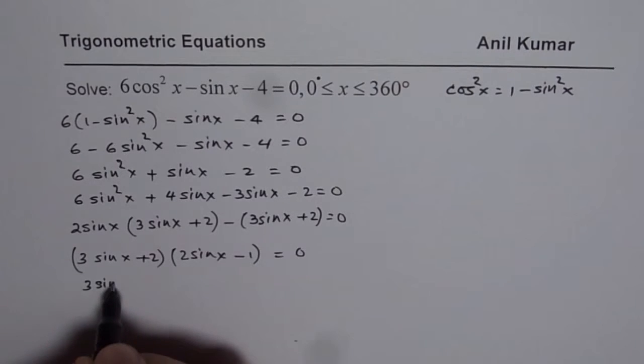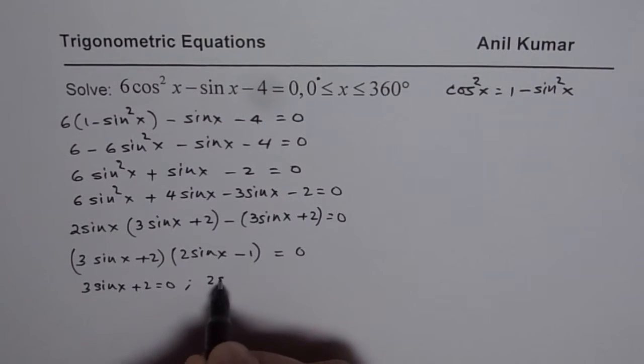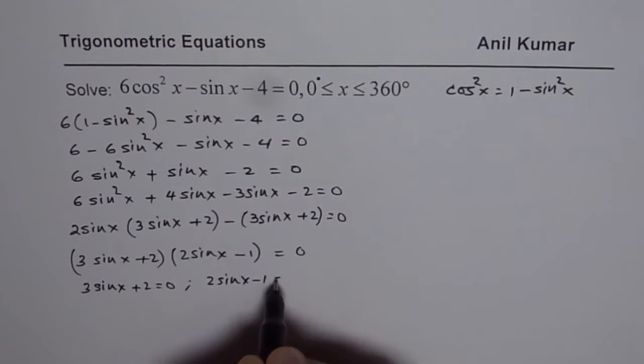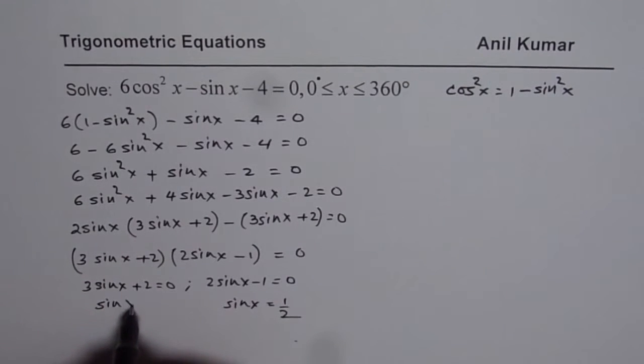One is 3 sin x plus 2 equals to 0. The other one is 2 sin x minus 1 equals to 0. So that is sin x equals to half. And this is sin x equals to minus 2 over 3.